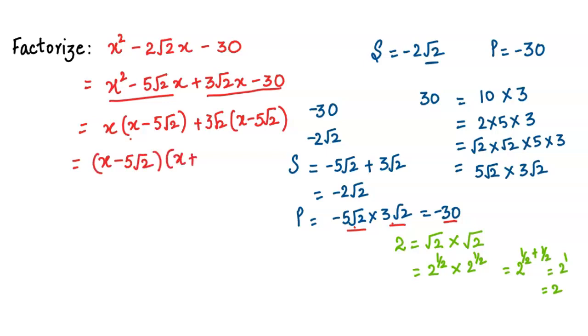And I get two factors: (x - 5√2) and (x + 3√2). So I hope it is clear. Thanks for watching. Goodbye.